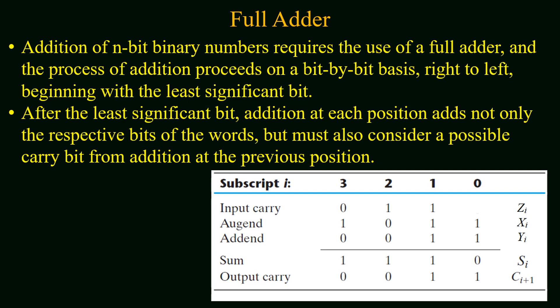The addition of n-bit binary numbers requires the use of full adders, and the process of addition proceeds on a bit-by-bit basis, just as we do in daily-life arithmetic, from right to left, beginning with the least significant bit.